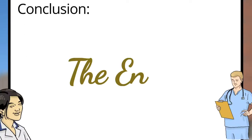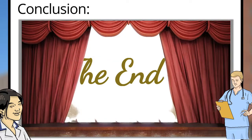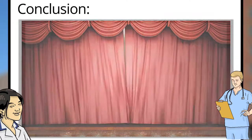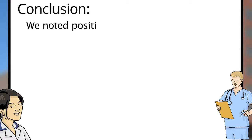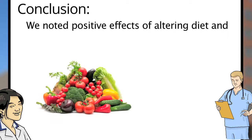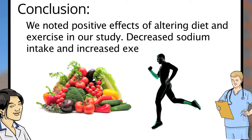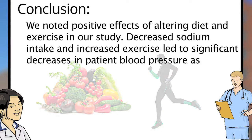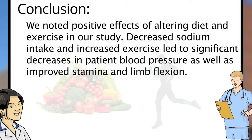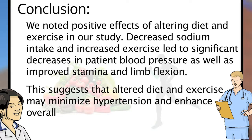We've now reached the last main section of a manuscript. Here in the discussion section, you'll interpret your findings and provide the reader with a broader perspective. Recall that the gist of your conclusions was: we noted positive effects on altering diet and exercise in our study. Decreased sodium intake and increased exercise led to significant decreases in patient blood pressure, as well as improved stamina and limb flexion.